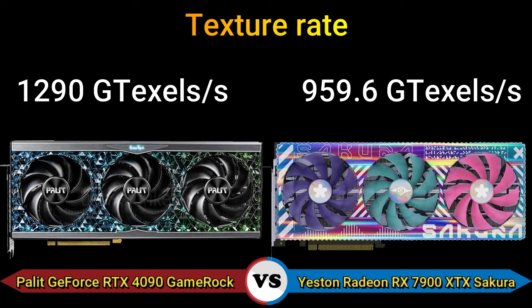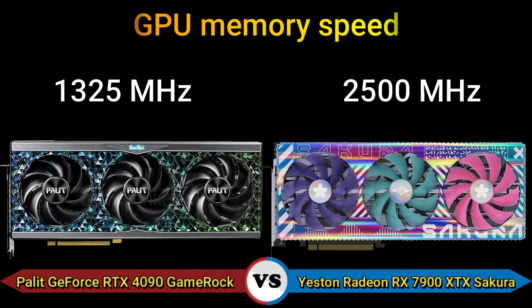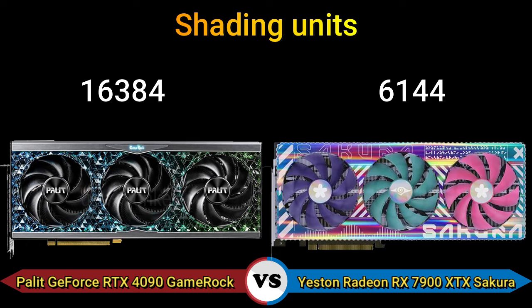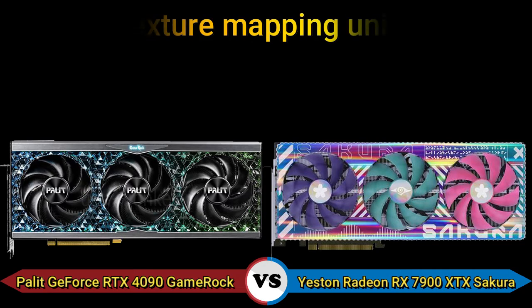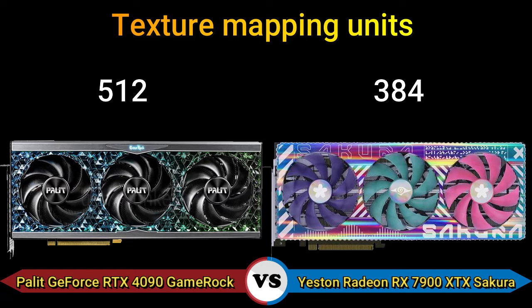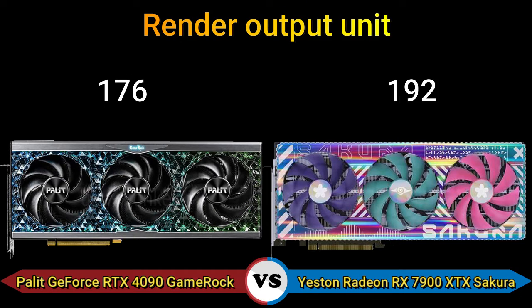Texture rate: 1290 GT/s and 959.6 GT/s. GPU memory speed: 1325 MHz and 2500 MHz. Shading units: 16384 and 6144. Texture mapping units: 512 and 384. Render output units: 176 and 192.